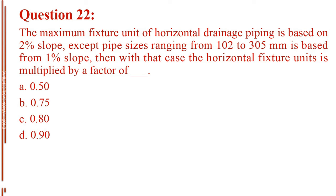Question number 22. The maximum fixture unit of horizontal drainage piping is based on 2% slope, except pipe sizes ranging from 102 to 305 mm is based from 1% slope; then with that case the horizontal fixture units is multiplied by a factor of blank. Letter A, 0.50. Letter B, 0.75. Letter C, 0.80. Letter D, 0.90.